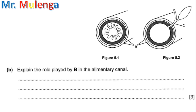We come to question B, which reads: Explain the role played by B in the alimentary canal. Part B refers to the muscle tissues — specifically the circular and longitudinal muscles. These muscles play a role in the process called peristalsis, which is a wave-like movement of the bolus. During this process, these muscles push the bolus down the alimentary canal through contraction and relaxation, meaning they work as antagonistic muscles.